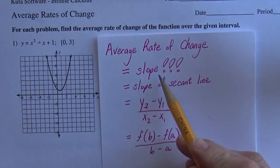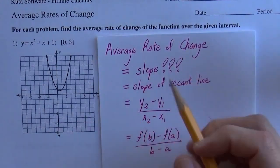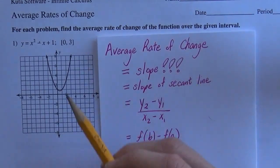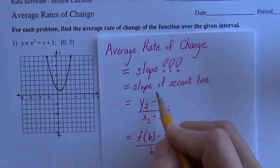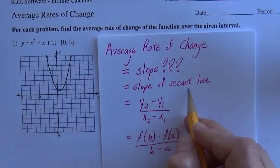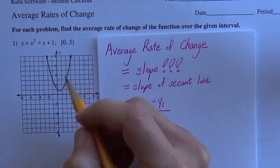Average rate of change is a fancy way of asking you to find the slope. We know how to find the slope of lines, but we don't know how to find the slope of curves yet. So we're going to draw secant lines. The average rate of change is the slope of the secant line.